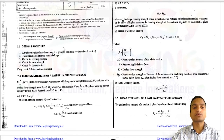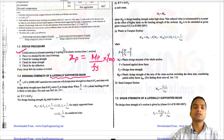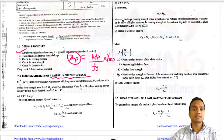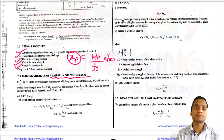For laterally supported beams, if no section is provided we choose a trial section with sufficient plastic section modulus. ZP is approximated as MP divided by FY times gamma_m0. We then select a section from the steel table, determine its classification, check bending strength MD, shear strength VD, and finally check deflection.